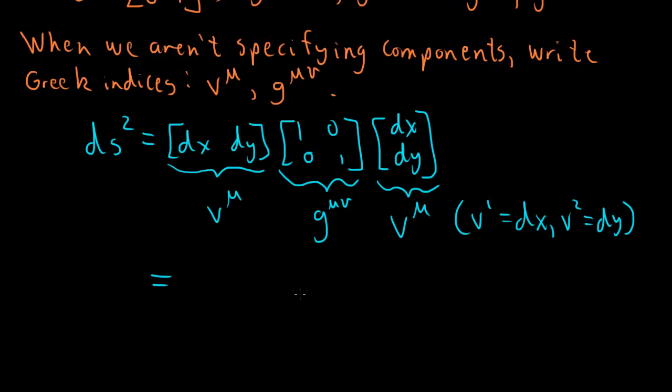So we're going to write this as V with a mu downstairs, G mu nu upstairs, and then V with a nu downstairs. So this is kind of silly because we're just writing these three things that look like we're multiplying them together. But this is the beauty of the notation.